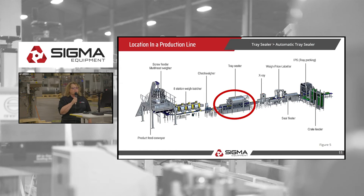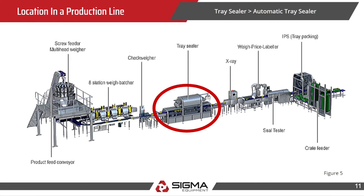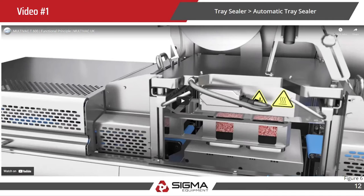This is a rough illustration of a poultry production line, and you can see the tray sealer is right in the middle of it. You've got weighing equipment beforehand and then labeling and x-ray equipment afterwards. This video shows the process — how the unit works.